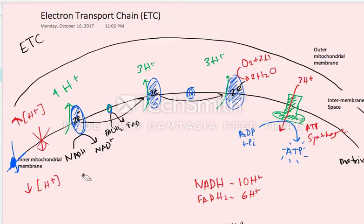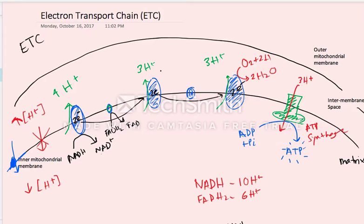This picture shows you the electron transfer chain — view my other video for a more detailed description. The NADHs and FADH2s go to proteins on the inner mitochondrial membrane and get oxidized, going from NADH to NAD+. In this process, a lot of protons are being pumped out. Each NADH causes the pumping out of 10 protons. The FADH2s get oxidized at the second complex, leading to the pumping out of six protons. You need three protons to go through ATP synthase to produce one ATP.